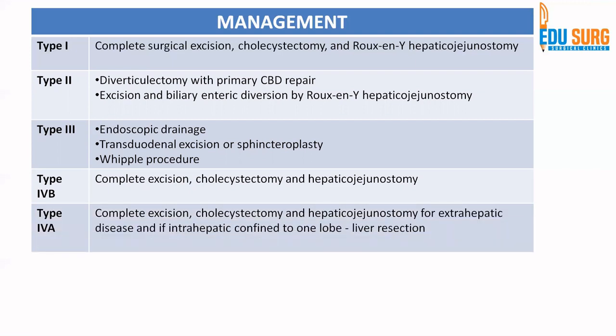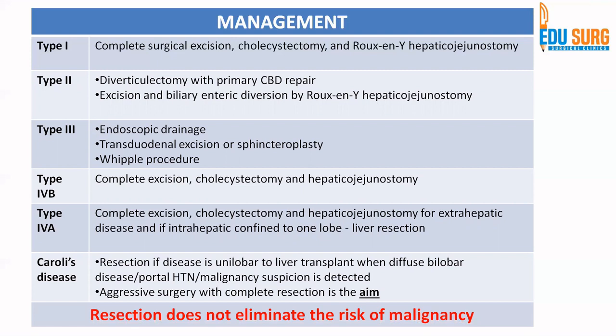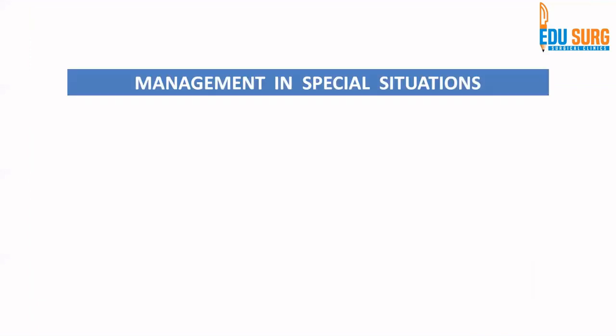Type 4A involves both intra- and extrahepatic disease. For the extrahepatic component, treatment is the same. For the intrahepatic component, if confined to one lobe, liver resection can be done. If it is bilobar disease, a liver transplant may be needed. For Caroli's disease, resection is possible if unilobar; liver transplant is needed when disease is diffuse and bilobar, when there is secondary biliary cirrhosis with portal hypertension, or when there is suspicion of malignancy. Aggressive surgery is required with complete resection, but importantly, the risk of malignancy is not eliminated by surgery, and long-term surveillance is warranted.